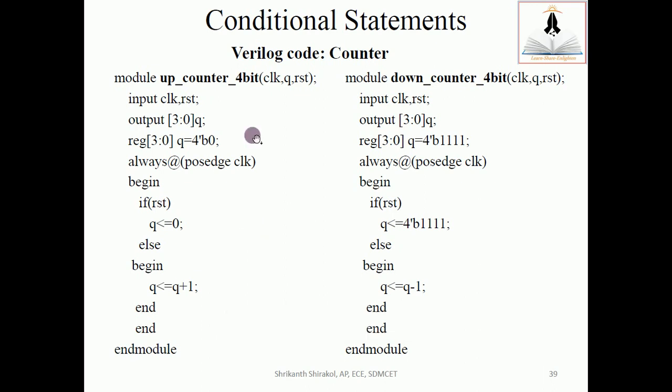Now let us look at the counters: up counter and down counter of 4-bit. We will just learn how to write the 4-bit up counter considering two inputs—clock and reset—and output being Q which is of 4 bits. Let's take the help of paperwork.